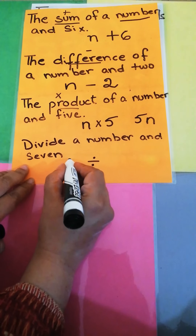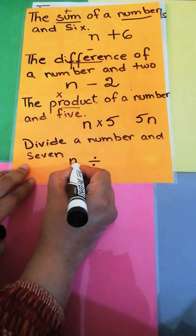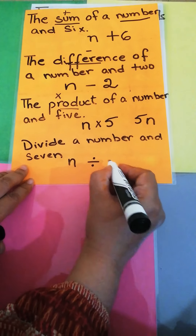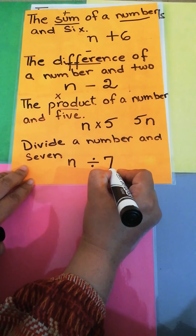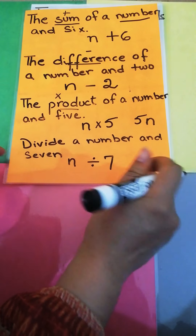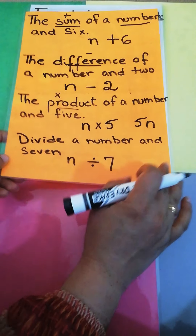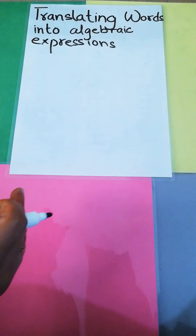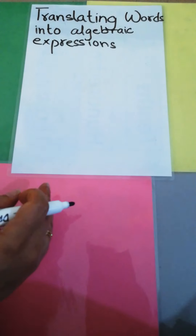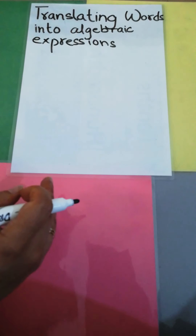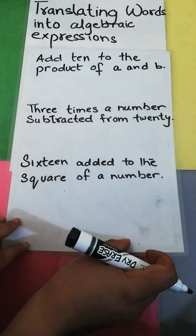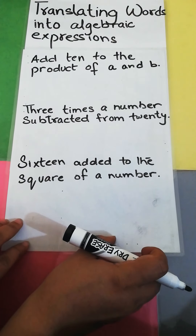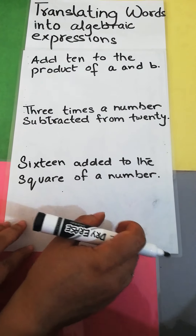Divide a number and seven. The division sign will be there: a number — any number — divided by seven, written as n ÷ 7.